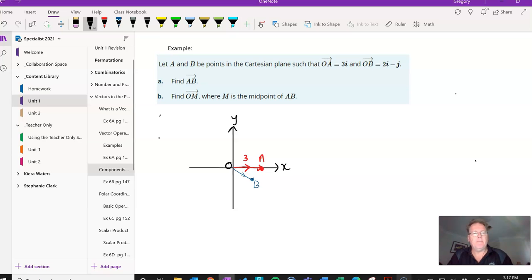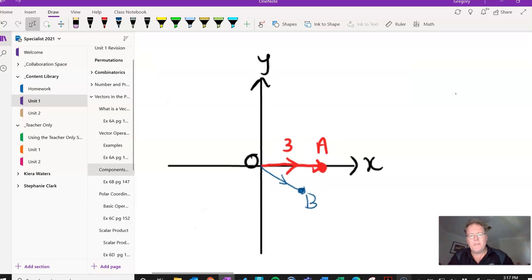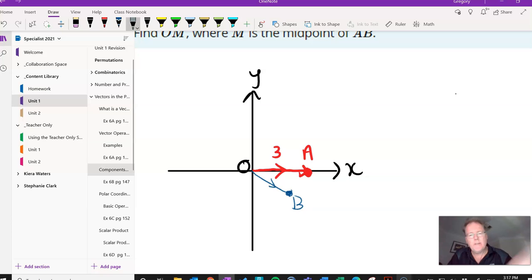First question says to find AB. Well, let's zoom in a little bit so we can see it. Well, AB is this vector here, from A to B.